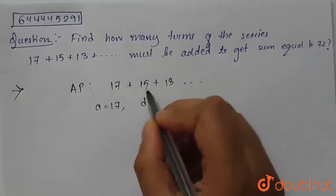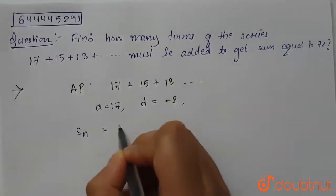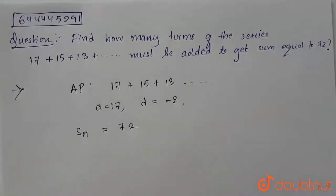And we are given sum of n terms Sn equals 72. We have to find the value of n.